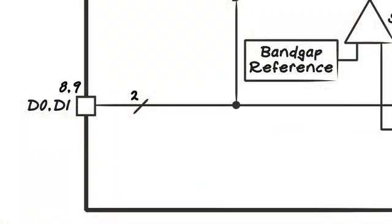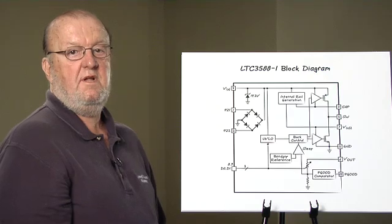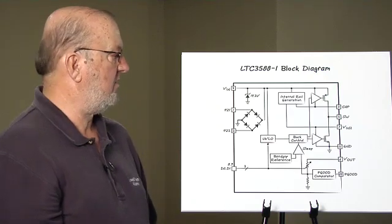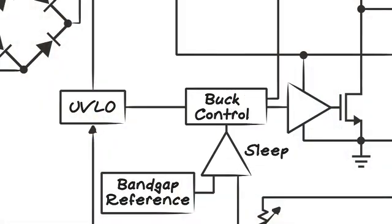We also have two digital bits that are used to set the output voltage to 1.8, 2.5, 3.3, or 3.6 volts. There's a low current under voltage detector which is used to control the buck regulator.